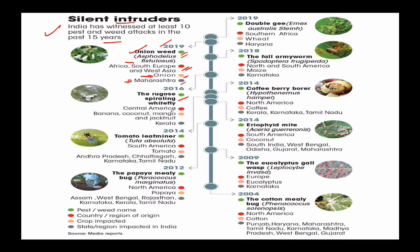Whitefly - its origin is Central America; it has affected banana, coconut, mango, and jackfruit, with major impact in Kerala. Tomato leaf miner - origin is South America; it has affected tomatoes in Andhra Pradesh, Kerala, and Tamil Nadu. In 2018, Papaya Mealybug - origin is North America; it affected papaya fruit in Assam, West Bengal, Rajasthan, Kerala, and Tamil Nadu across multiple years including 2016, 2014, and 2012.